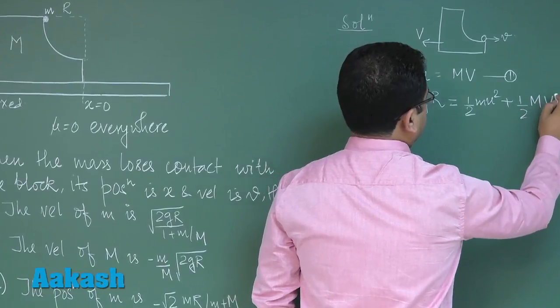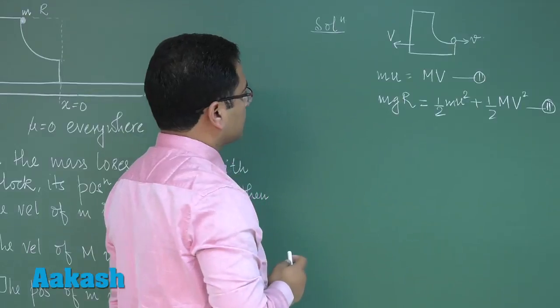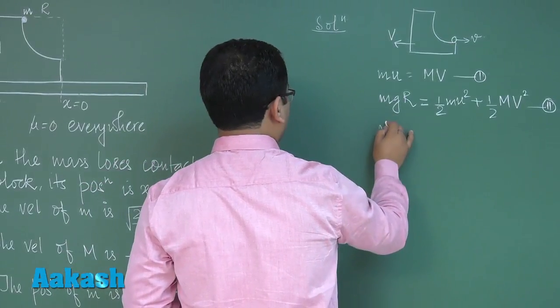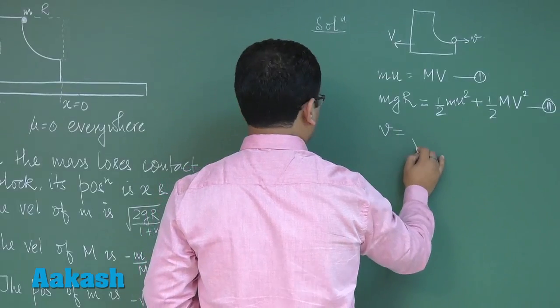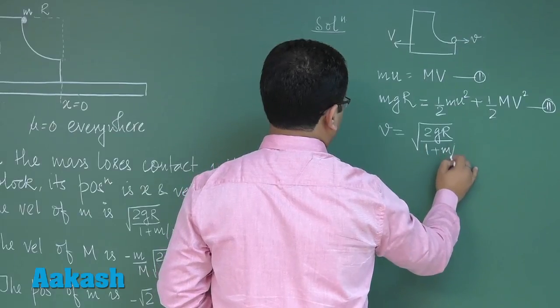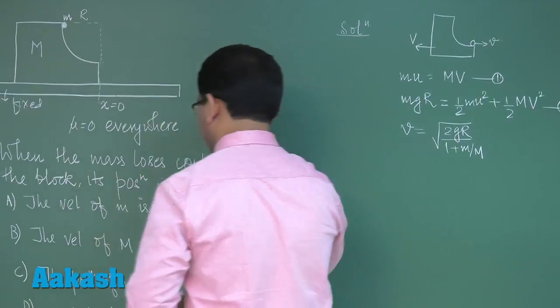And this now becomes the two simultaneous equations we need to solve and when I solve this thing the velocity of small m, this would come out to be root 2gR divided by 1 plus m by M, so that would directly lead to option number A.